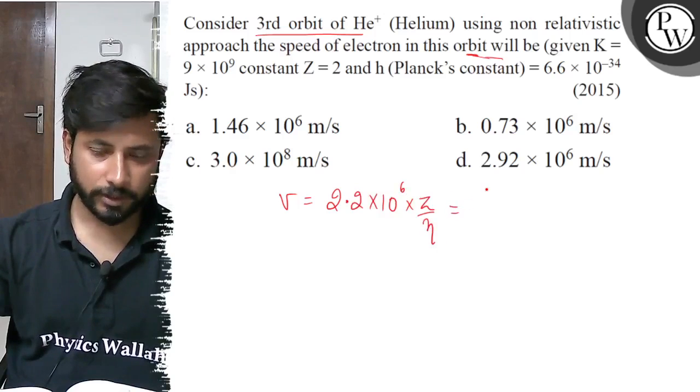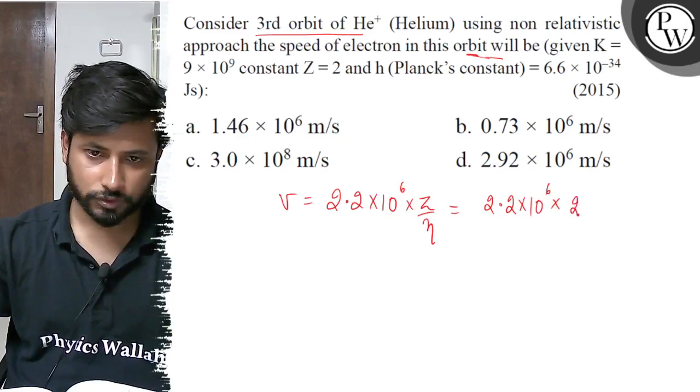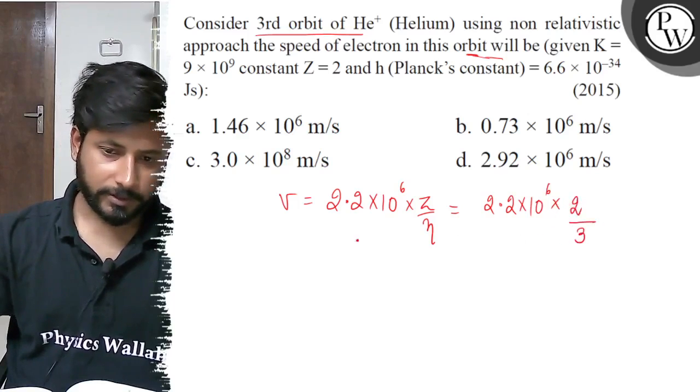Z value is 2. So we have 2.2 × 10^6 × 2, divided by 3 for the third orbit.